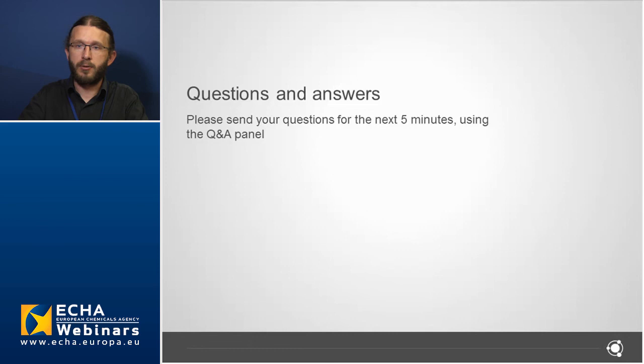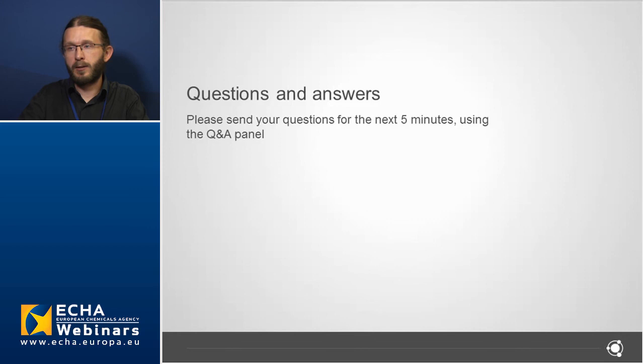There was also a question on the availability of the IUCLID webinar for beginners. We are planning a webinar on the 4th of October on how to prepare and create a registration dossier using IUCLID 6 and REACH-IT 3 — you can find more information on the ECHA website under support webinars and already register. We plan to have the recording of today's webinar available in one week on the ECHA website and the IUCLID 6 website. Thanks a lot for your participation. We will close the webinar at 12:15 Helsinki time.